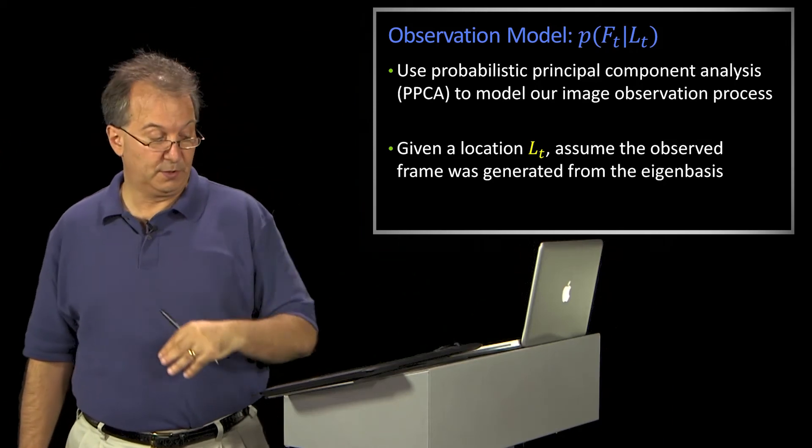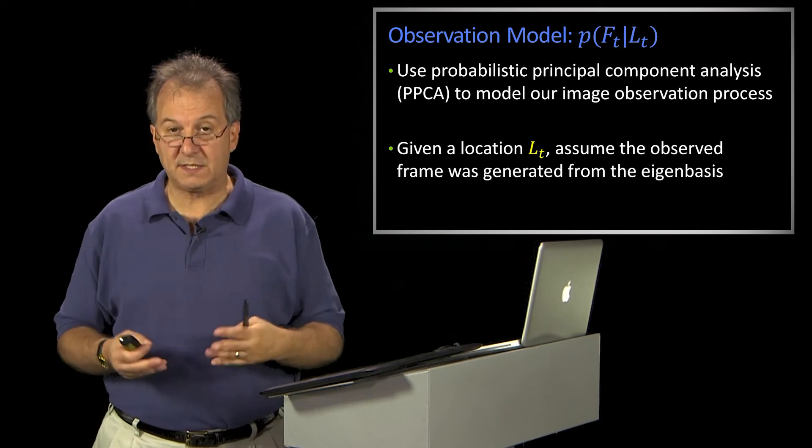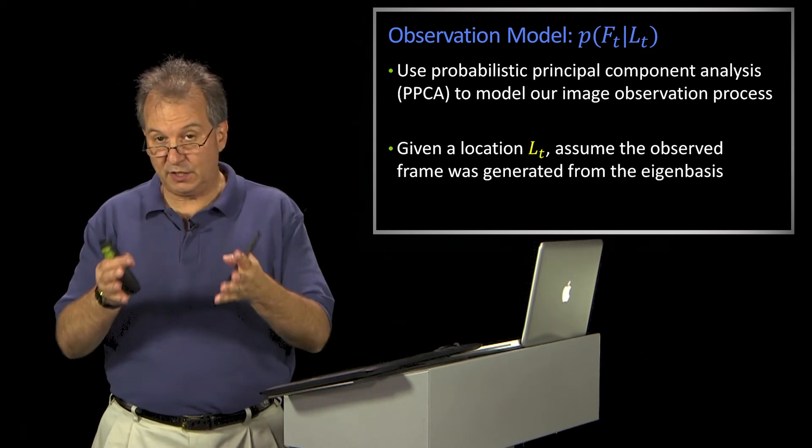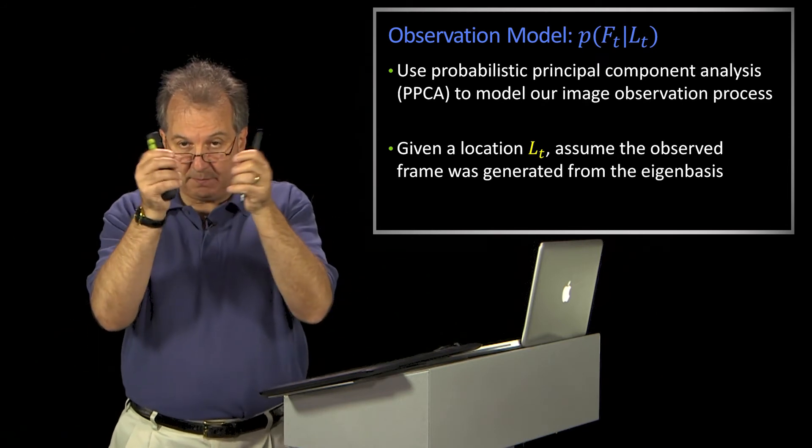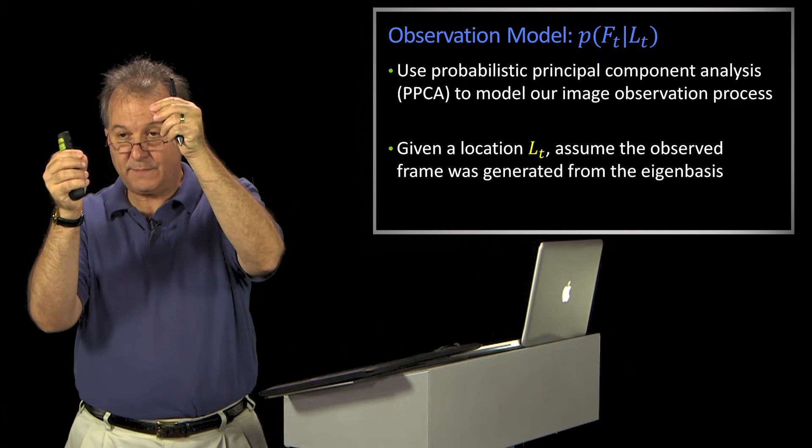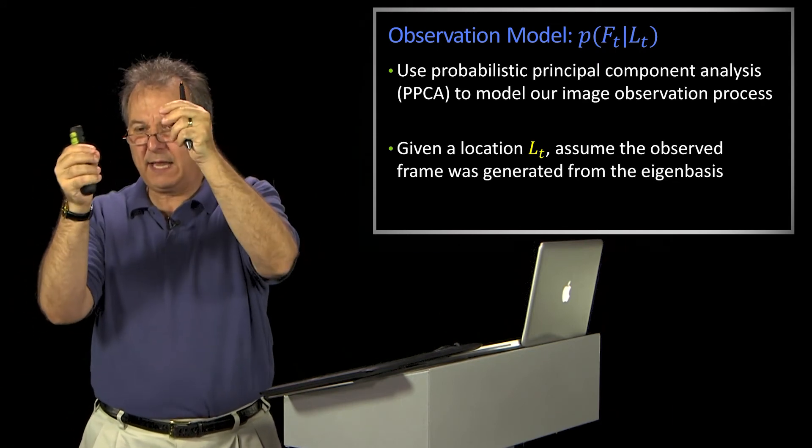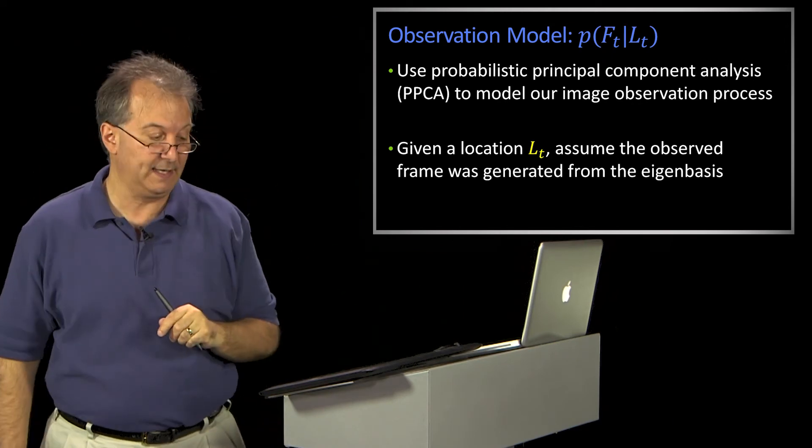So now we need our observation model. We're going to use what's referred to as probabilistic PCA, but we're basically going to use PCA. And given some possible location, we have to evaluate that observation by asking how likely is it that that's the right place. And what it's going to mean is, how well can I generate that?